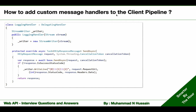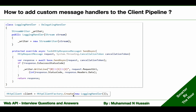To add the newly created custom message handler to the client pipeline, we just need to pass it to the Create method of HttpClientFactory when we try to create the client. Remember, we can pass more than one custom message handler to the Create method, separated by a comma.